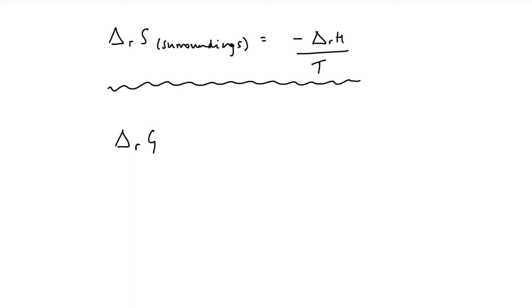So delta G in standard conditions is equal to delta H minus the temperature multiplied by the change in entropy.